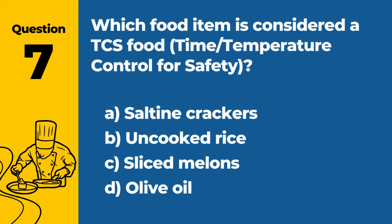Question 7: Which food item is considered a TCS food (time/temperature control for safety)? A. Saltine crackers. B. Uncooked rice. C. Sliced melons. D. Olive oil. Answer: C. Sliced melons. Sliced melons are considered a TCS food, as they require time and temperature control for safety.